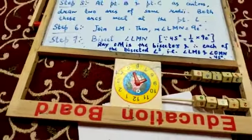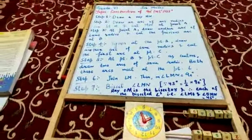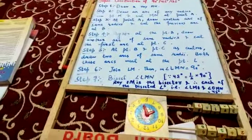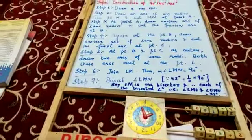So this is the construction of 45 degree. 45 degree hamei kaise milta hai. Jab ham 90 degree ko bisect karte hai.